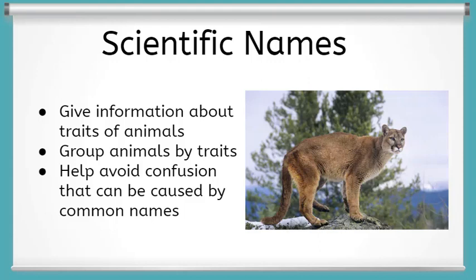Taxonomies also give many species their scientific names. Scientific names are useful because in addition to giving information about what groups they belong to and their traits, scientific names avoid confusion. The common name of a species that you or I might use can vary based upon region. A good example is how mountain lions can also be called cougars, panthers, catamounts, and pumas depending on location. However, knowing their scientific name, Puma concolor, ensures that scientists are on the same page when discussing them.